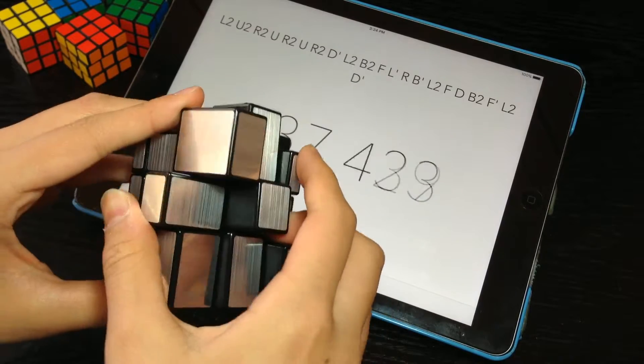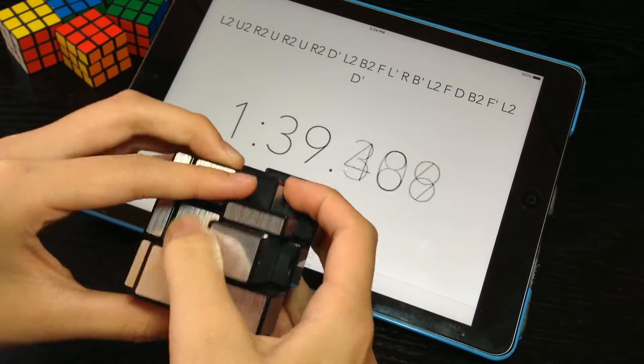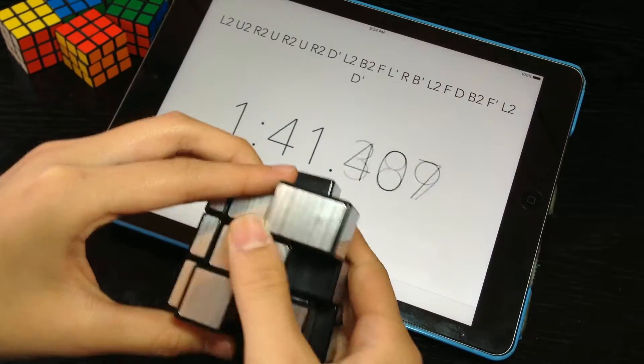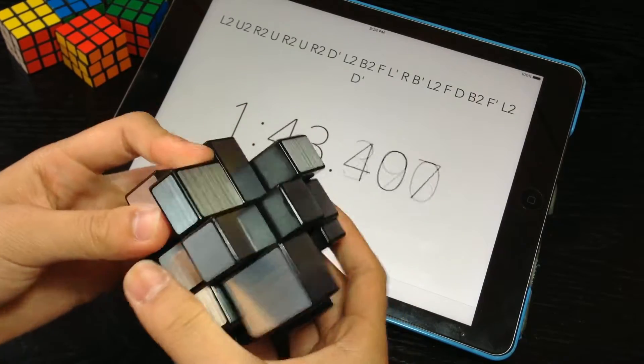In third place is the 3x3 average world record. Felix's record of 6.54 got just over half a million views.